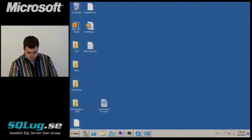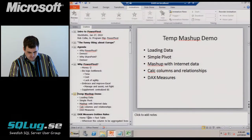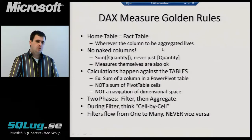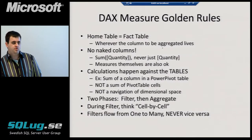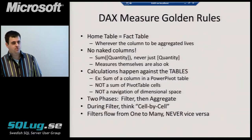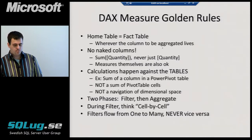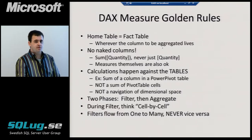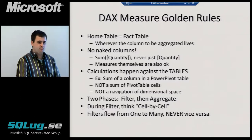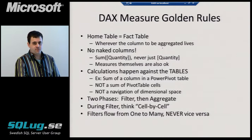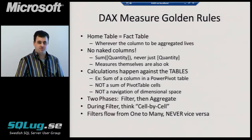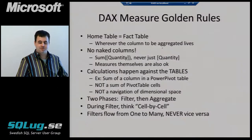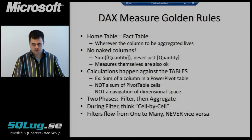The measure creation UI asks you for what I call a home table — for database pros, think of that as the fact table. It's the table where the columns you're going to be aggregating live. When you're writing DAX you can't just put a quantity field in your formula — you always have to have an aggregation: sum, average, count, max, or something. DAX also adds a whole bunch of new aggregation functions. Once you've defined some measures, you can use measures to define other measures — measure one plus measure two is legal, since they're already aggregations.